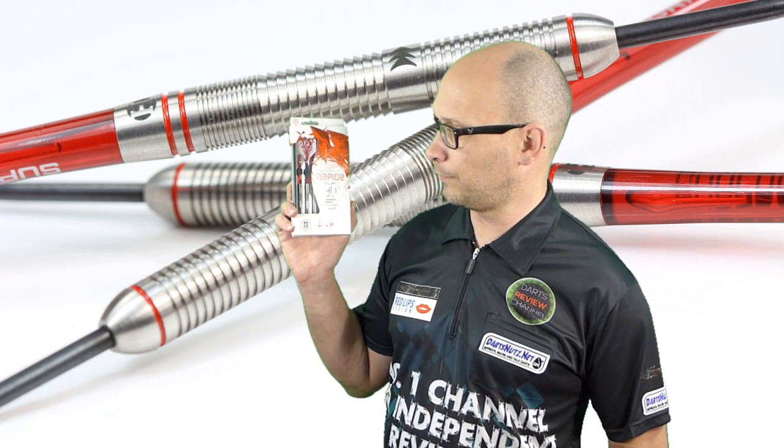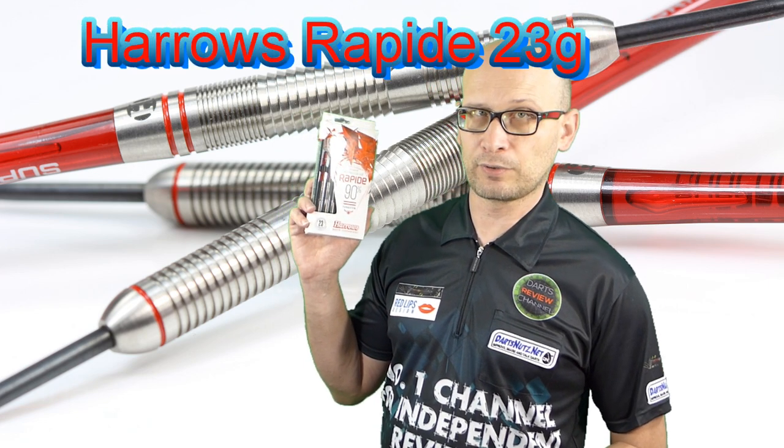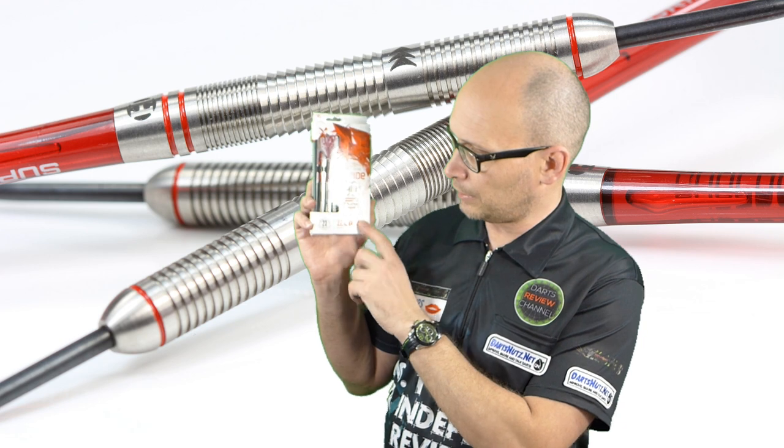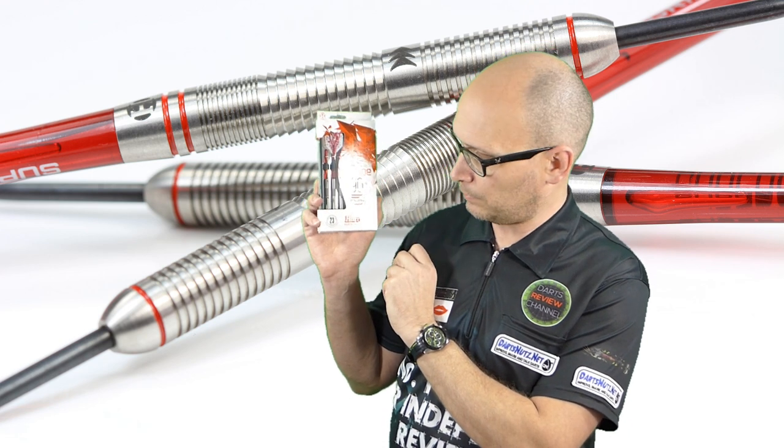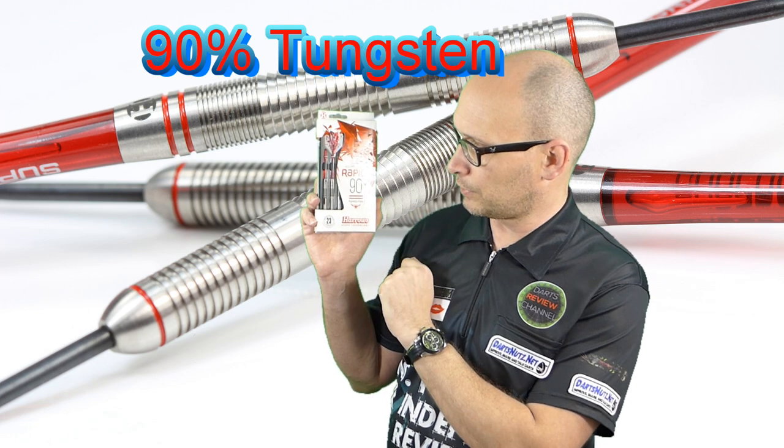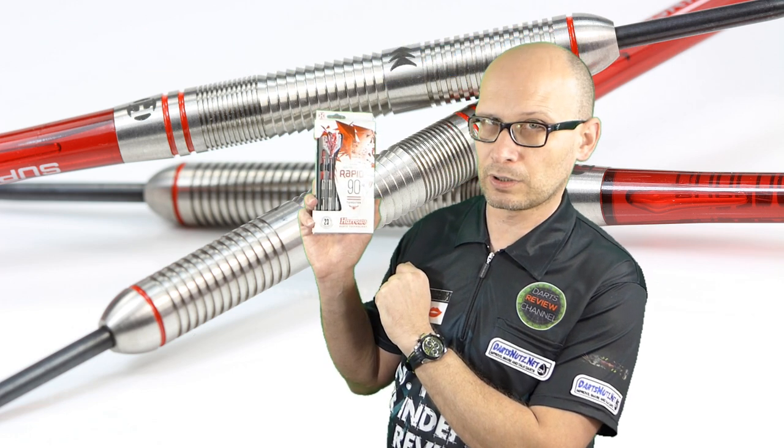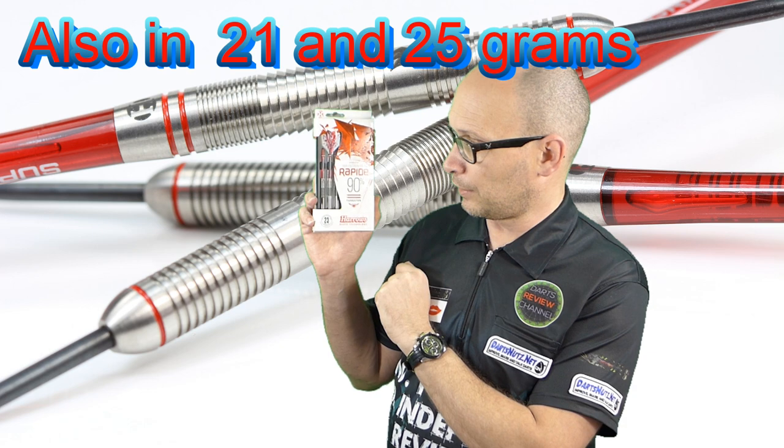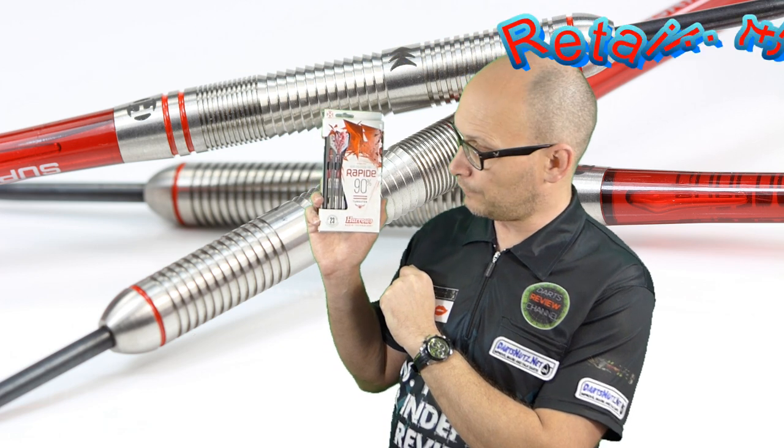For this review I'm reviewing another set of the Harrow's Rapide. This is the other model in the range and this is like a straight barrel model. These are 23 gram and 90% tungsten. There's also a 21 and a 25 gram and they retail for a very reasonable £21.95.